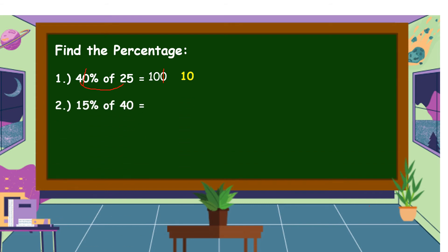Another example, 15% of 40. So, we're going to cancel 1 0. Then multiply 15 and 4. The answer is equal to 60. Then we're going to cancel 0 in 60. Therefore, 15% of 40 is equal to 6.